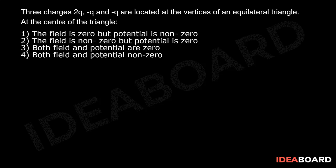So let us assume the three charges are placed at the three vertices of an equilateral triangle. Let us assume this equilateral triangle A, this is B and it is C. So at A plus 2q, at B minus q and at C minus q charges are placed.